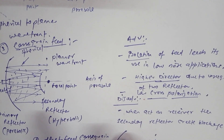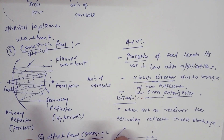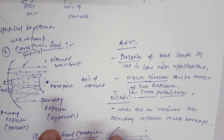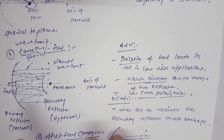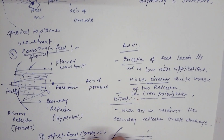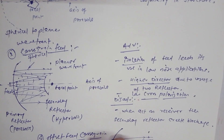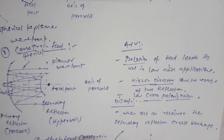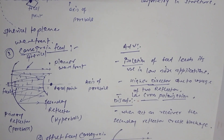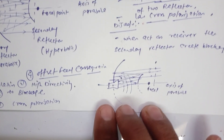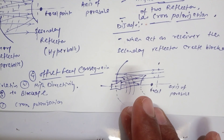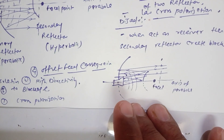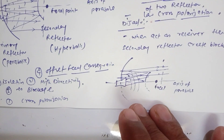The advantages of the Cassegrain feed are: isolation allows its use for low-noise applications, high directivity due to two reflectors, and the symmetric structure provides no or low cross-polarization. The disadvantage is blockage caused by the secondary reflector during reception. This is overcome using the Cassegrain offset feed, which uses half of each reflector, eliminating blockage — but since the structure is no longer symmetric, cross-polarization occurs.